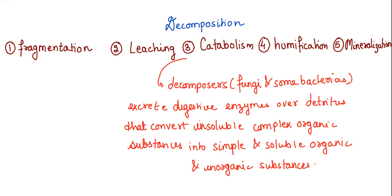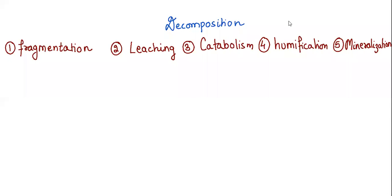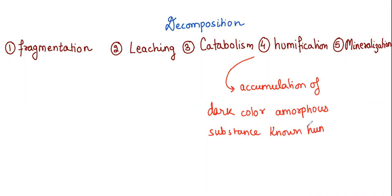This is about catabolism, which means basically breakdown. Next is humification. In humification, basically accumulation happens of dark colored amorphous substance which is known as humus.